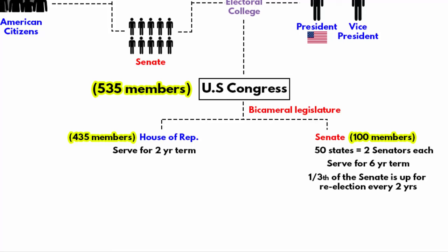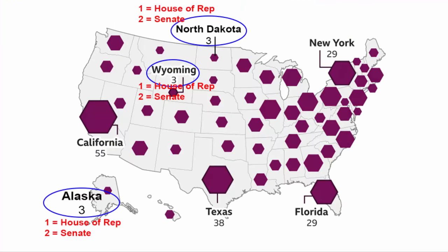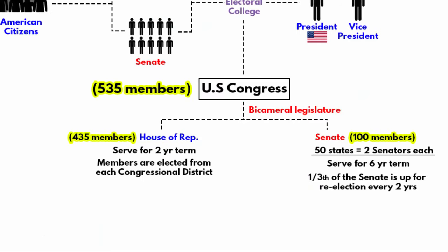Senators are also chosen by the governor. If a senator resigns or dies, the governor typically appoints the replacement until a special election can be held, although it varies from state to state. Each state sends two senators to represent their state in the US Senate. However, in the House of Representatives, a state's representation is based on its population. For example, smaller states like Wyoming, Alaska, and North Dakota have a minimum of three representatives, while large states like California have 53 representatives. Members of the US House of Representatives are elected from each congressional district, and each district has an average population of 700,000 people.